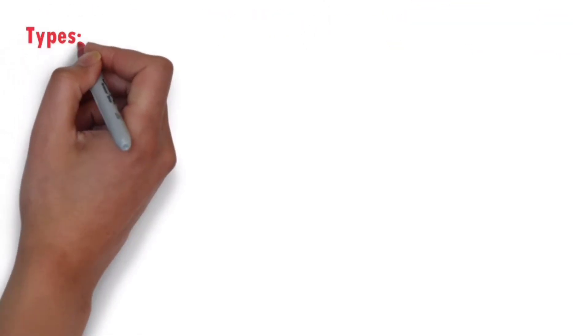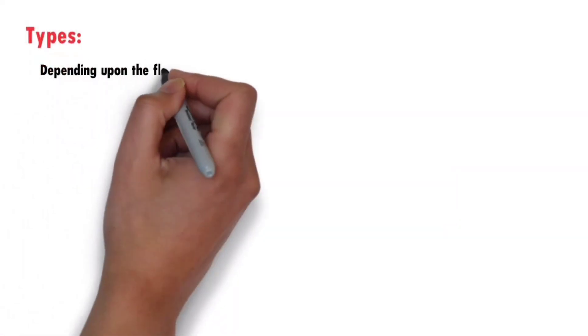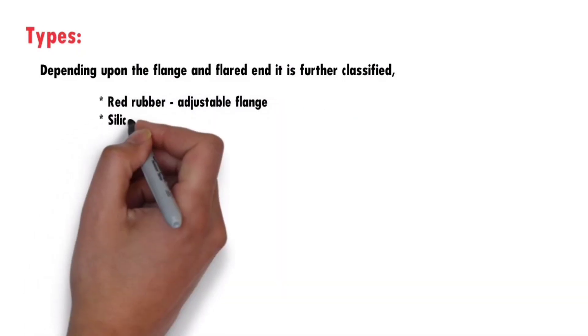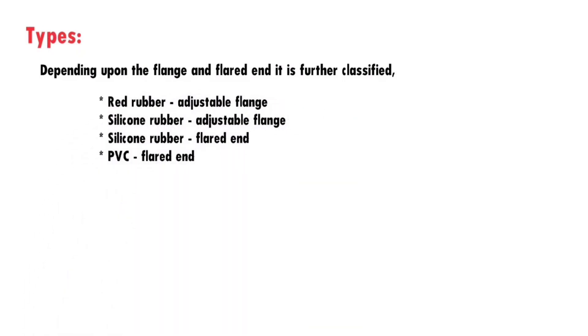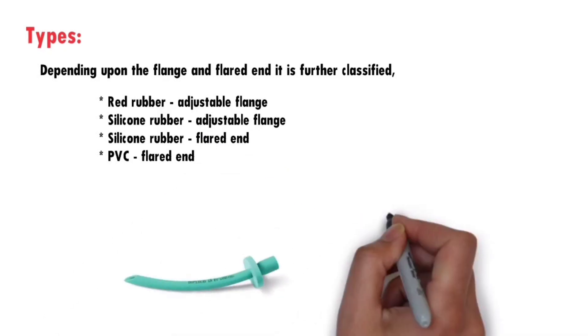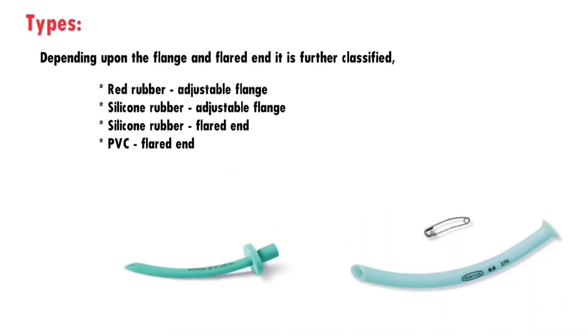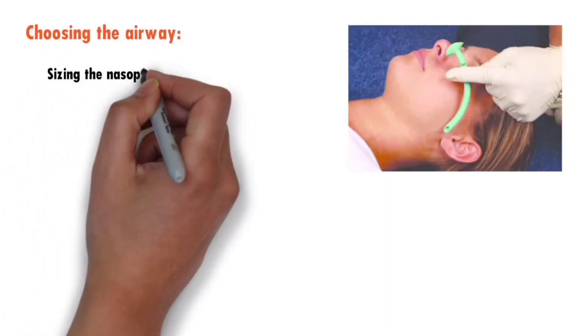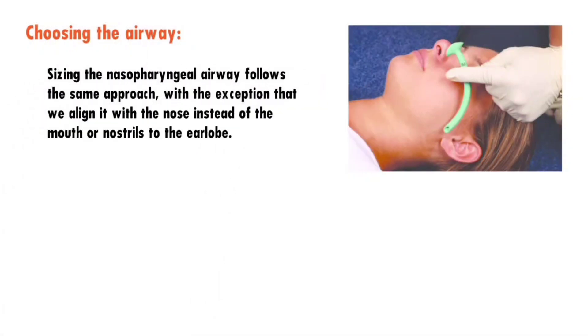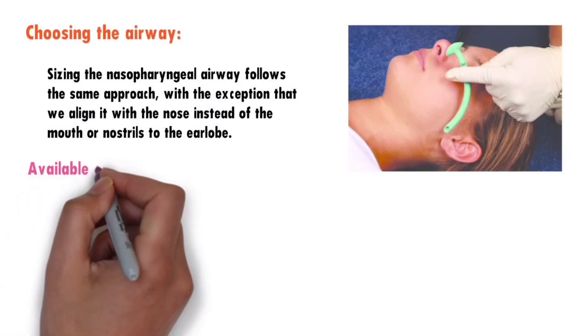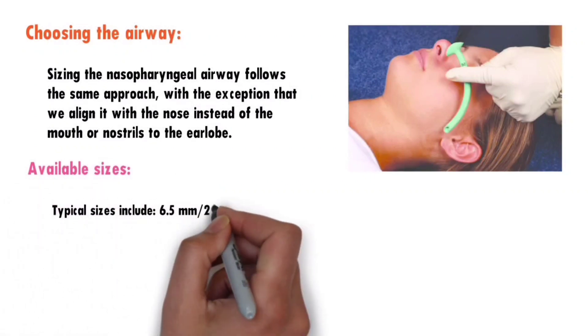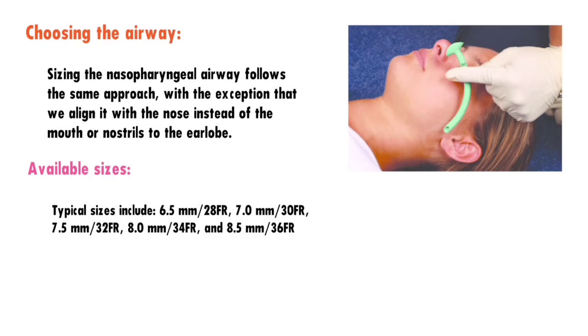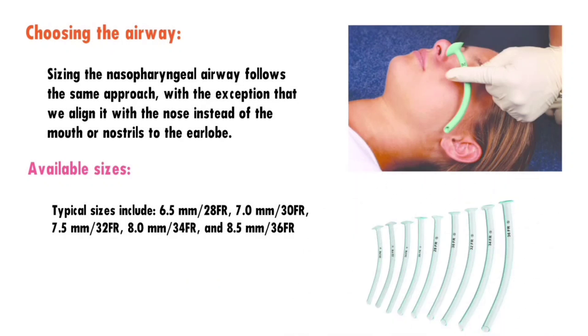Types of nasopharyngeal airways: depending upon the flange and flared end, they are further classified. Both the flange and flared end keep the nasopharyngeal airway in position without slipping inward. Sizing follows the same approach as oropharyngeal airways, except we align it with the nose — from the nostrils to the earlobe. Nasopharyngeal airways are measured using the French catheter scale, but sizes are usually also quoted in millimeters.